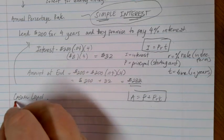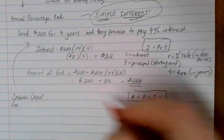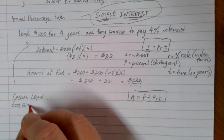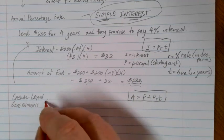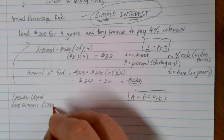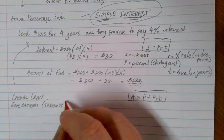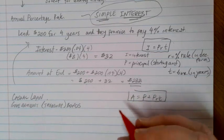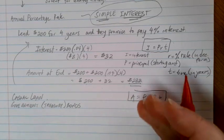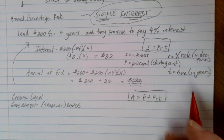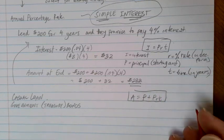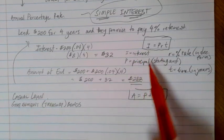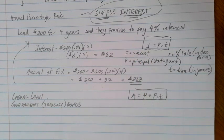The other type of situation where we run into things involving simple interest is actually in government bonds. Sometimes we call these treasury bonds. The idea of a bond is you're going to give some money to the government. They're going to use it for some good purpose, and then at the end of a certain amount of time, they're going to give you back that money and a little bit more. So really just that concept of this idea of simple interest.